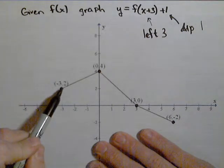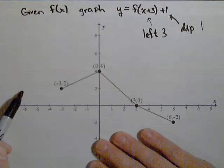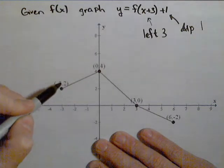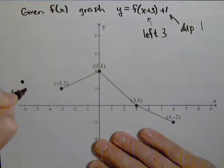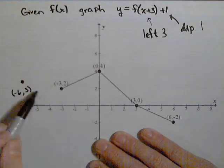Let's take this point negative 3, 2. If I move it left 3 units—1, 2, 3—the x value goes to negative 6. Then if I move it up 1 unit, the y value goes from 2 to 3. So it will now be this point out here, which would be negative 6, 3. This point moved left 3 and up 1.